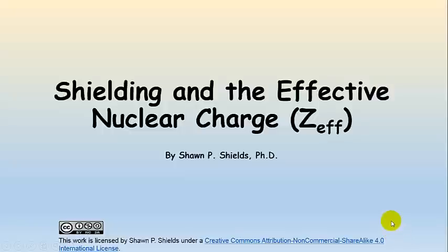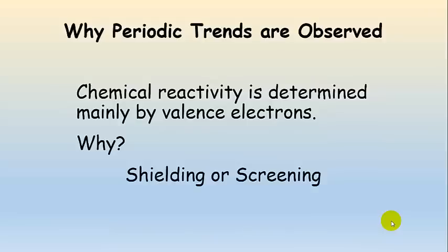Shielding and the Effective Nuclear Charge. We're going to start talking about why periodic trends are observed. It's not enough to just talk about periodic trends — we need to understand why they exist. Chemical reactivity is mainly determined by valence electrons, and that has to do with a concept called shielding, also called screening.